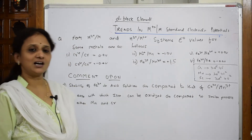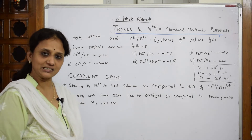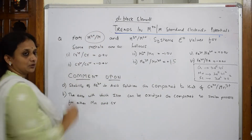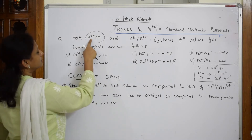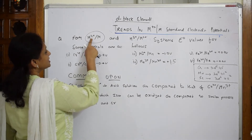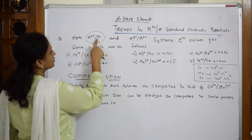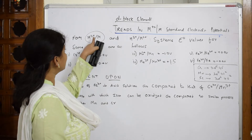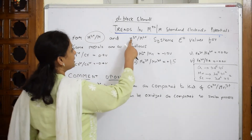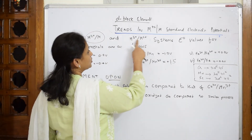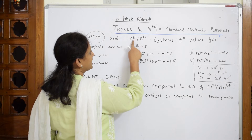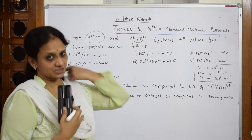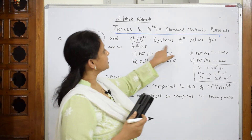The question looks large but it's easy to answer. They've given me M²⁺/M — from the +2 state, the metal ion has gained electrons and got converted to metal. And from M³⁺ to M²⁺, one electron is gained and it is getting converted to M²⁺ — so it is getting reduced. Done.